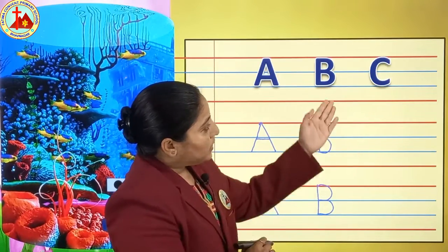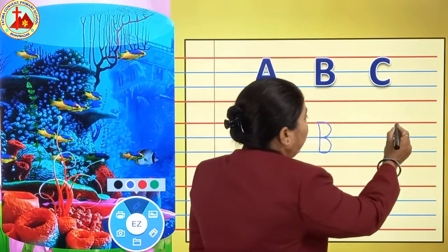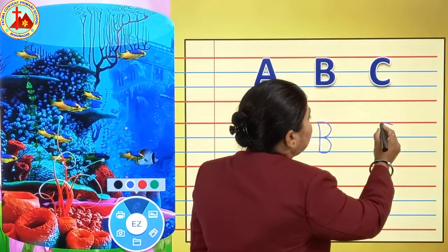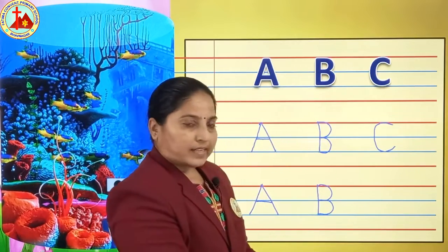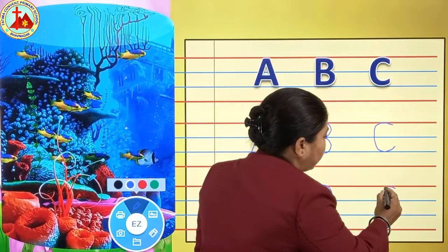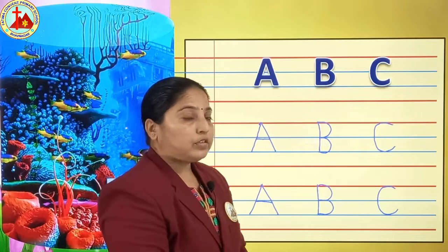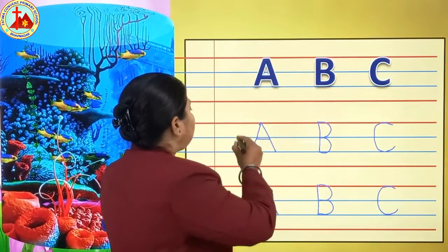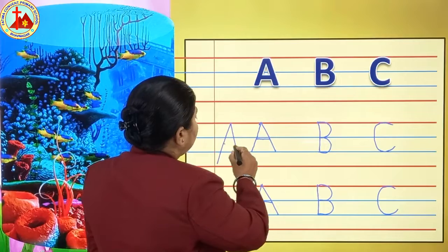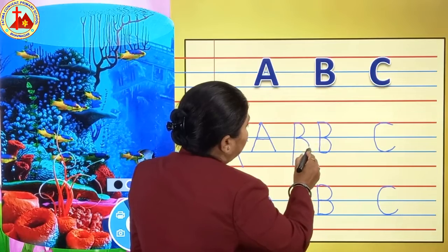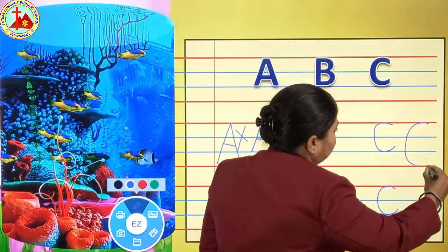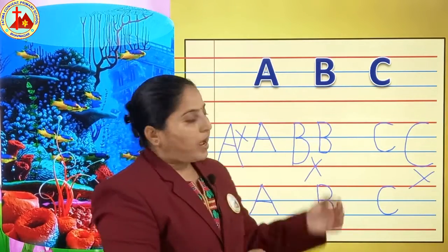After B, which letter is this? C. Now we all know how to write letter C — we will draw a curve like this. You have to follow the lines. You cannot write A, B, or C incorrectly like this — these are the wrong ones. So be careful.